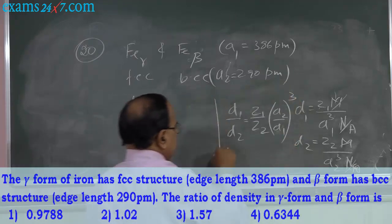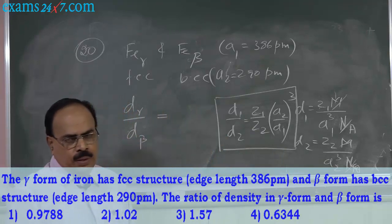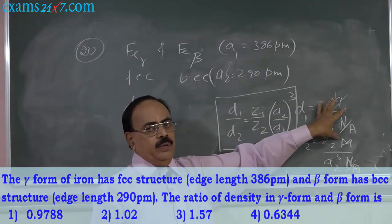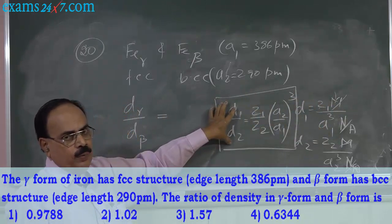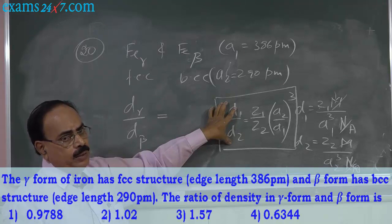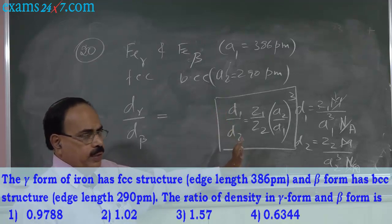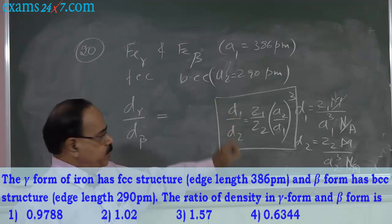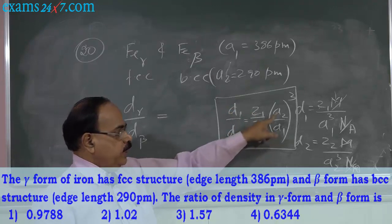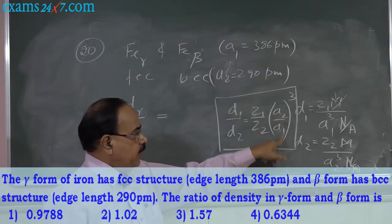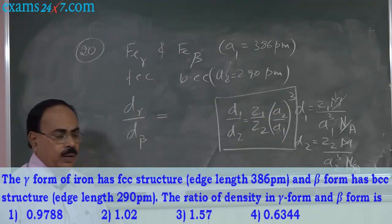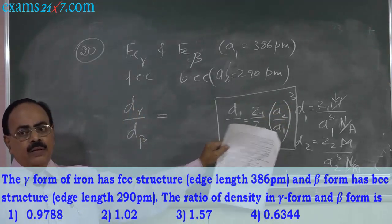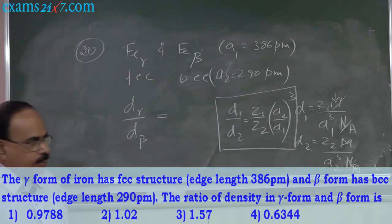So this is the simple formula — remember this. This is the comparison of density of two unit cells. One may be FCC, the other one may be BCC. So whenever two forms are given, D1/D2 = (Z1/Z2) × (A2/A1)³. This simplified version should be remembered. You do not keep deriving this in the examination — you do not have that much time.